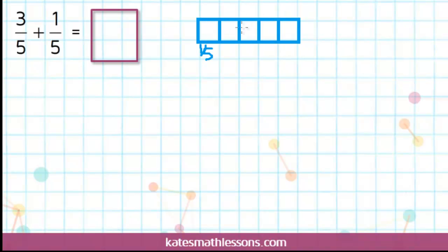Each box represents 1 fifth, and I have 3 fifths for this first fraction. I can represent that by coloring in 3 out of 5 of the boxes.